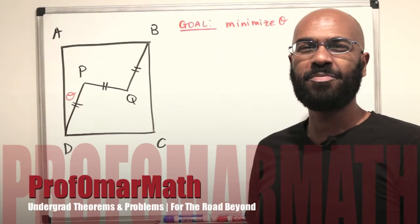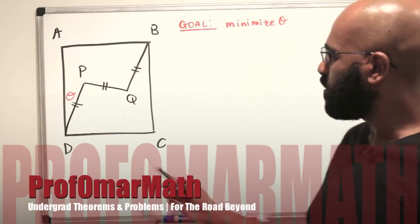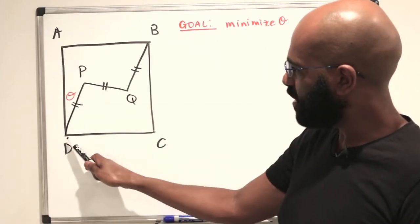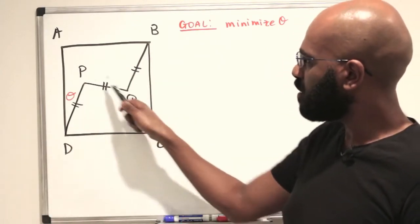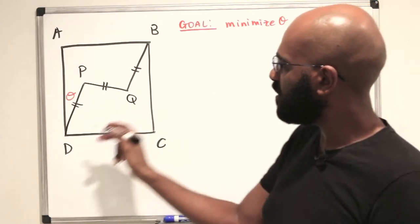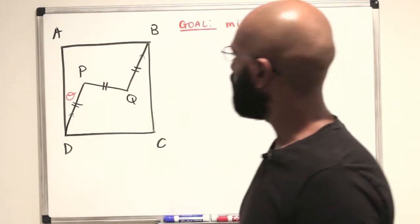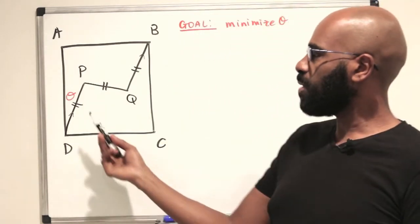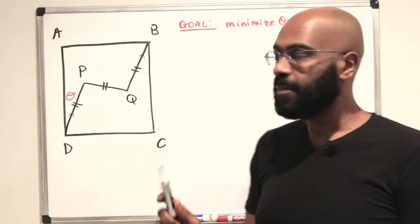Hey, welcome to today's video. I'm Prof Omar, and today we're interested in this question where we have a square ABCD and then these three sticks PD, PQ, and QB that are all of the same length. We're also given that PD and QB are parallel, and the question is: what's the minimum possible value of this angle PDA?